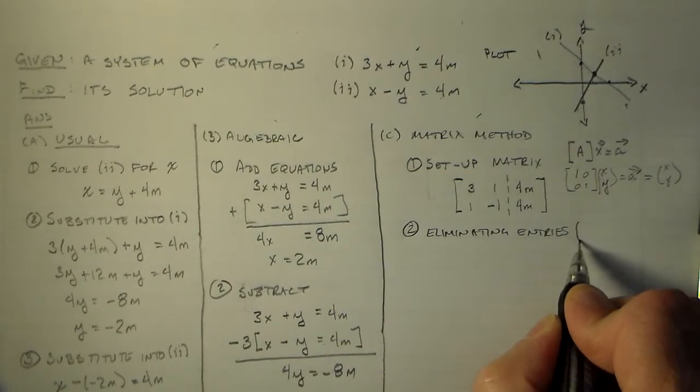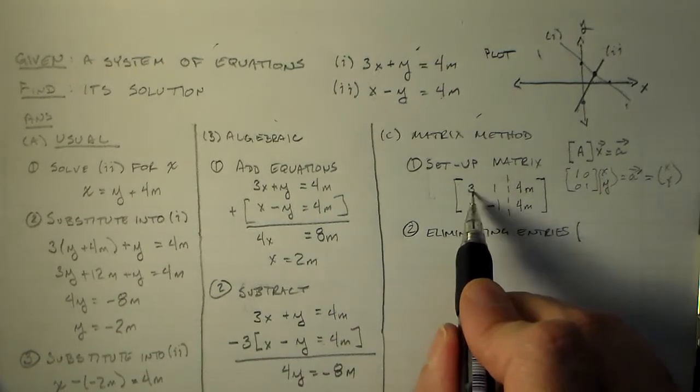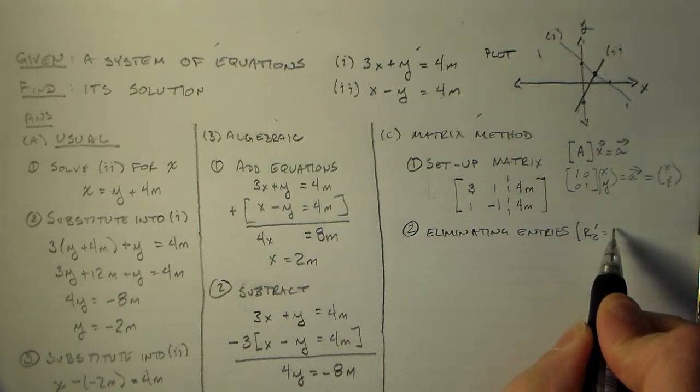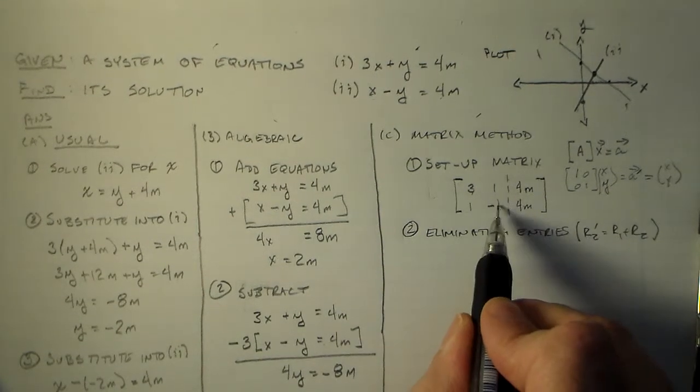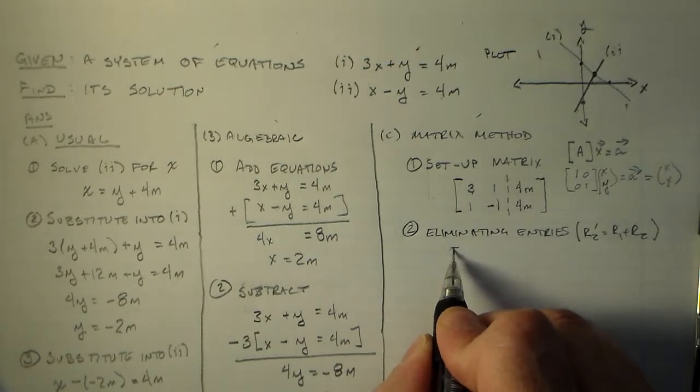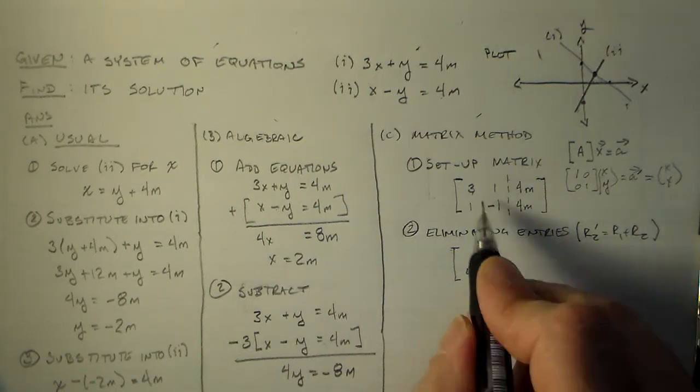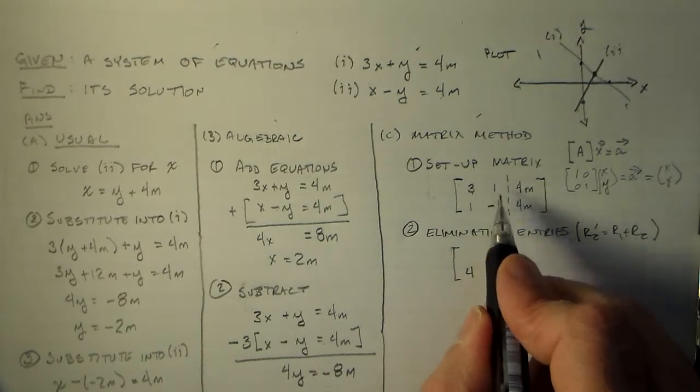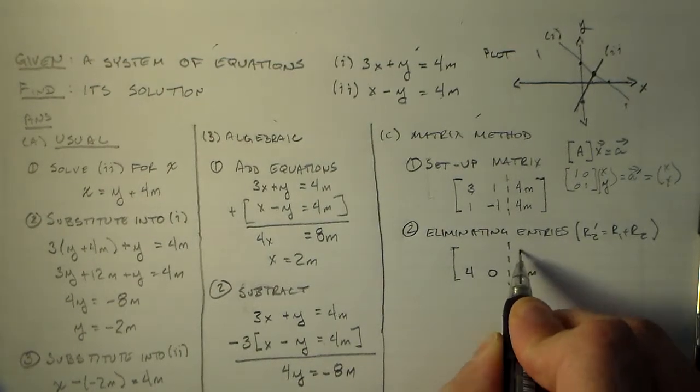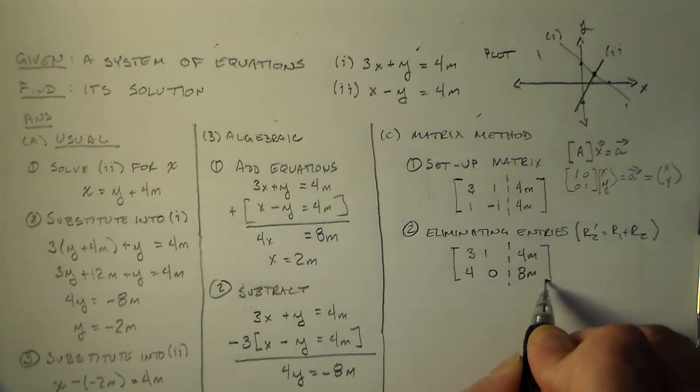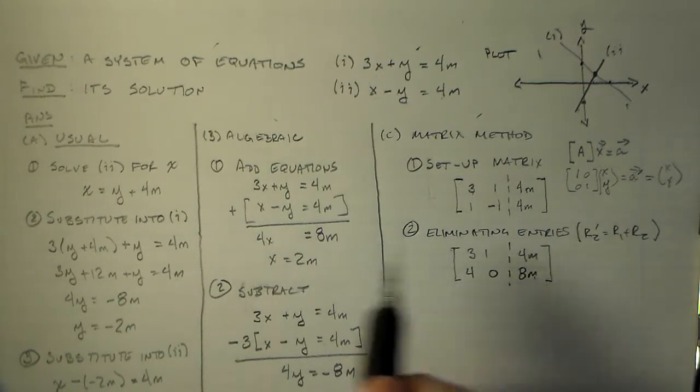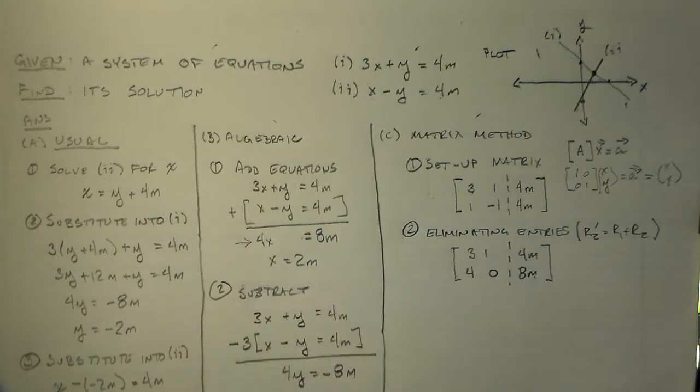And I'll start that process off by saying, okay, I'm going to take R1 and add it to R2 and replace R2 with that. So R2 prime is going to equal R1 plus R2. And that's going to eliminate this entry. We'll just end up having 4, 0. 3 plus 1 is 4, 1 minus 1 is 0, and 4 plus 4 is 8. And we have our original thing here. And so that's our first process. And that gets us right here. We did, that's exactly the same thing.